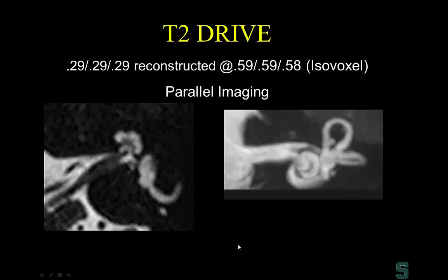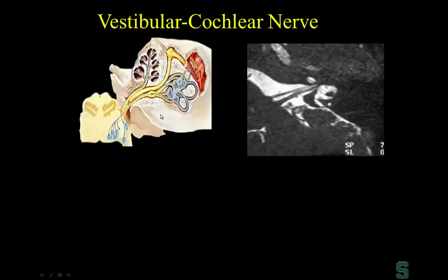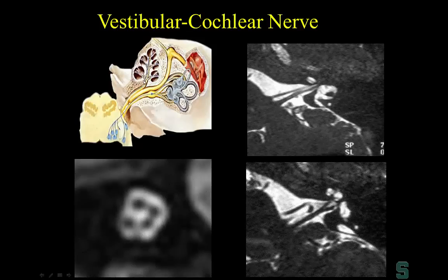We now routinely perform heavily T2-weighted imaging through the internal auditory canal, and the anatomy is very nicely seen. There are four nerves in the IAC — remember 'seven up, Coke down.' The seventh nerve is anterior and superior, so here's the facial nerve at its labyrinthine segment, anterior genu, and geniculate ganglion, seen on the heavily T2-weighted images.